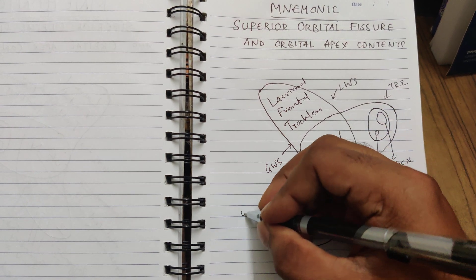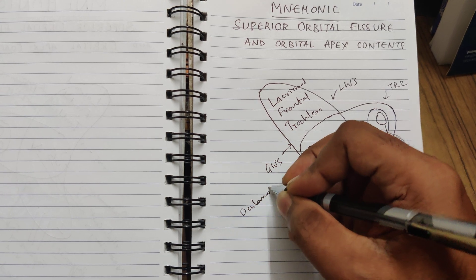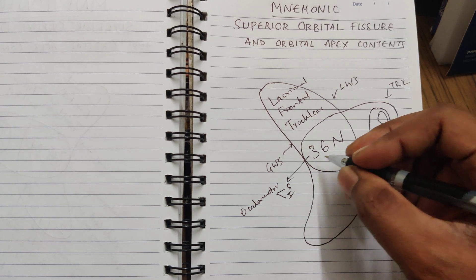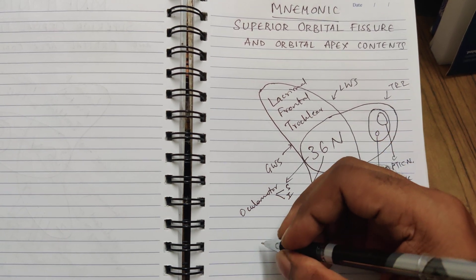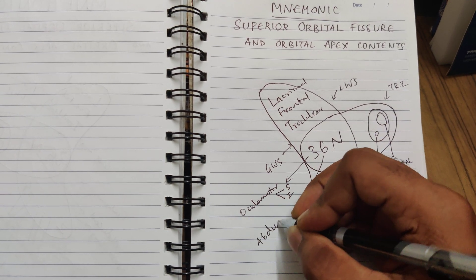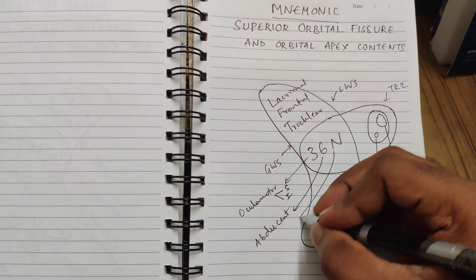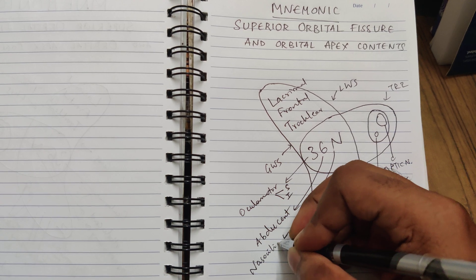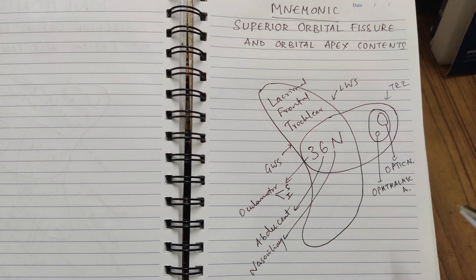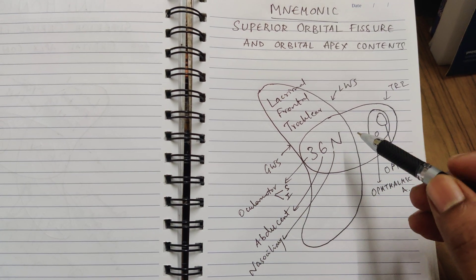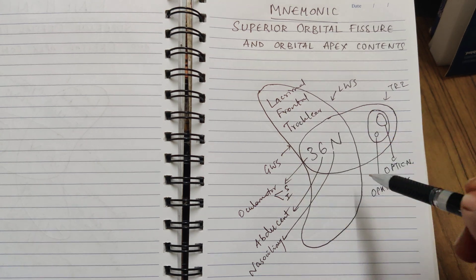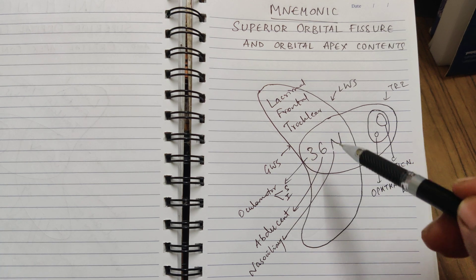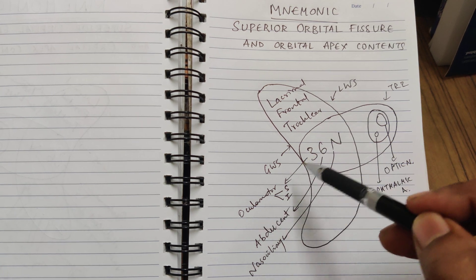In 36N: 3 is the third cranial nerve, the oculomotor nerve, which has two divisions — superior and inferior; 6 stands for the 6th nerve, the abducent nerve; and N stands for nasociliary nerve. So the contents of superior orbital fissure are LFT — lacrimal, frontal, trochlear — plus 3rd, 6th, and nasociliary nerve.